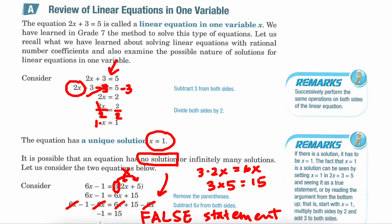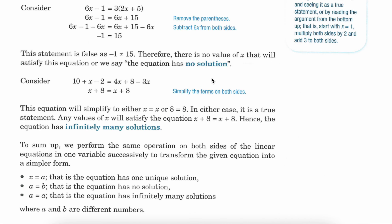This problem has no solution because nothing is going to work in order to balance that left-hand side and that right-hand side. So again, if there is an answer, it's one solution. A false statement means there's no solution.